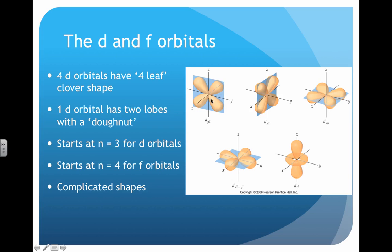And you can see that for d's there are five different orientations. For f, there are seven different orientations. And the shapes get more and more mathematically complicated.